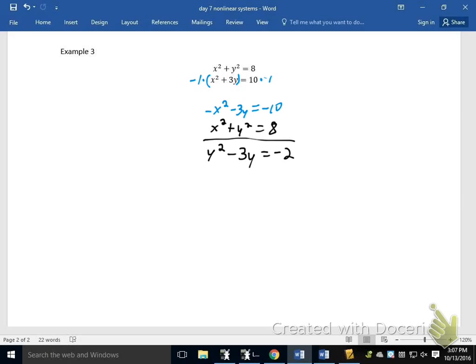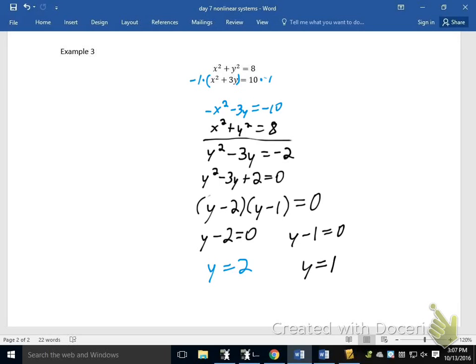So now what I would do is actually solve by factoring personally, is how I would go about this one. So when I do that, I'm going to get now my correct answers for this. And I get that Y equals 2 is one of my answers, Y equals 1 is the other. So now I'm ready to actually move forward and get my answers for X using these.